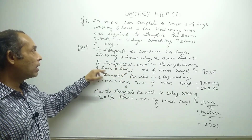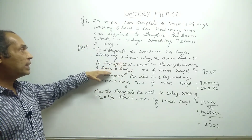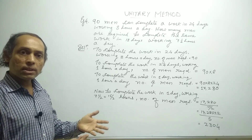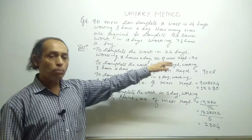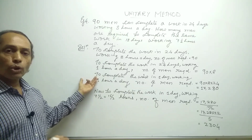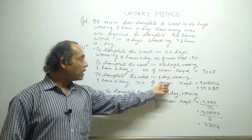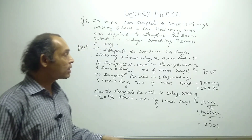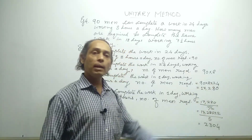Now, to complete the work in 24 days working only 1 hour a day, the number of men required is 90 into 8. Here, even though we go from many hours to one hour, we multiply — because reducing the time means more men are needed. Since the number of hours per day is reduced, the number of men required increases. So we get 90 × 8 × 24, which is 17,280 men to work just one hour a day.